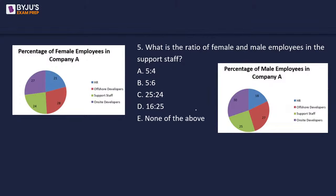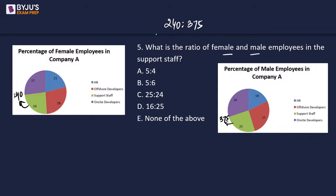Last question of Set 1: what is the ratio of female to male employees in the support staff? Female support staff = 24% of 1000 = 240. Male support staff = 25% of 1500 = 375. Ratio = 240 : 375. Dividing both by 5 gives 48 : 75. Dividing further by 3 gives 16 : 25. Option D is the answer.